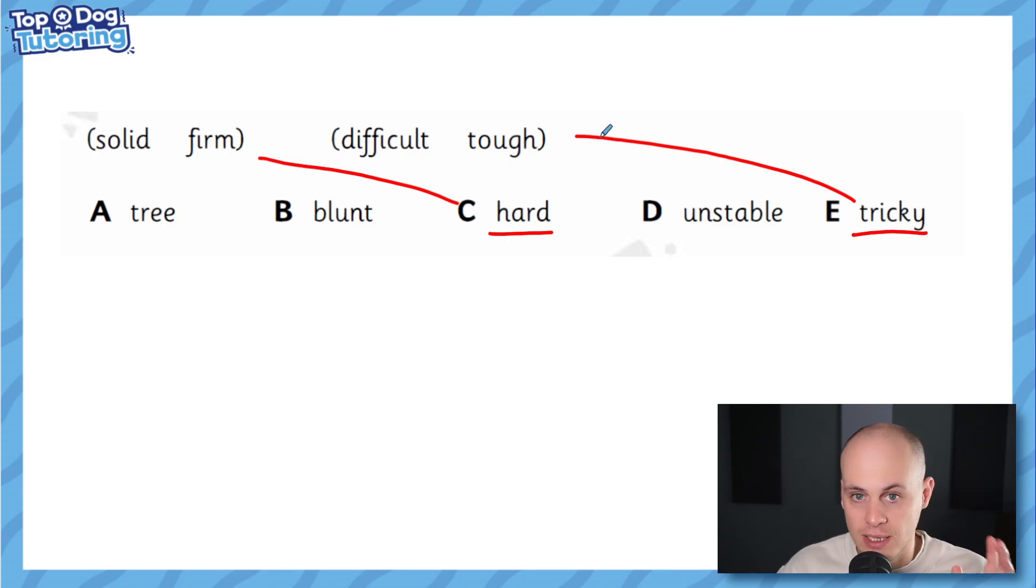As you'll see later in the video, sometimes it's not actually a homophone, it is a category but we'll get to that, stick around. So this is a nice easy one I think. Solid, firm, the only thing that really goes with solid and firm is hard and if you think about the word hard, it does have two meanings. It both means something solid, like a very hard surface but it also means when something's difficult, I might say this test is really hard or this question's really hard. So nice easy one to get us started, we can see that C is the answer because it goes with both pairs of words.